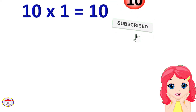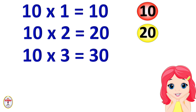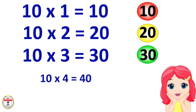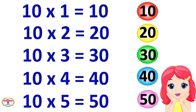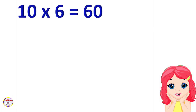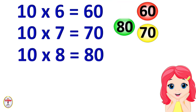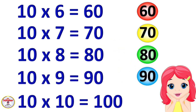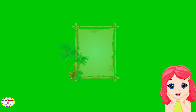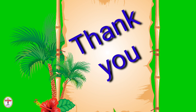Table of 10. 10×1=10, 10×2=20, 10×3=30, 10×4=40, 10×5=50, 10×6=60, 10×7=70, 10×8=80, 10×9=90, 10×10=100. Thank you.